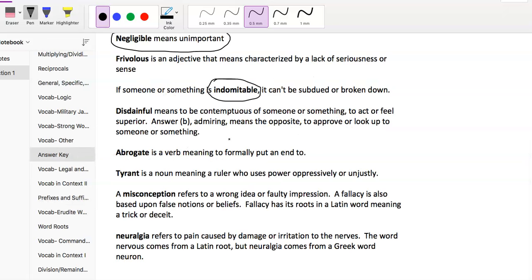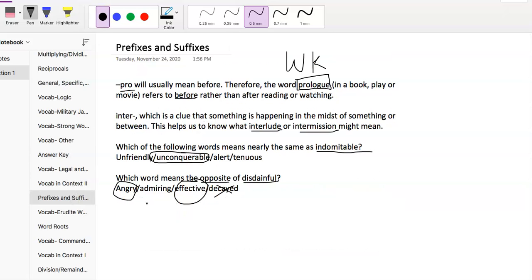Disdainful means to be contemptuous of someone or something, to feel or act superior. Answer B, admiring, means the opposite—to approve or look up to someone or something. It ends up that admiring is the answer we want. That was a tough one. Angry didn't help us. Remember we're talking opposite, so disdainful and angry would be more synonyms. We end up with admiring on this one.